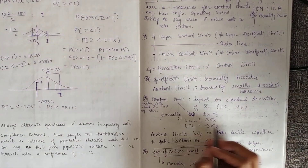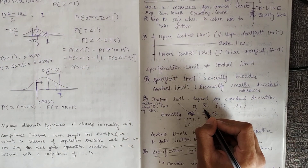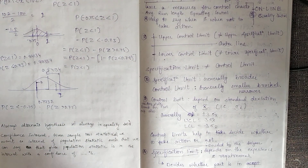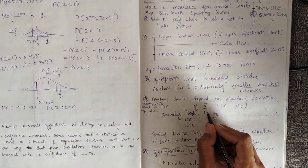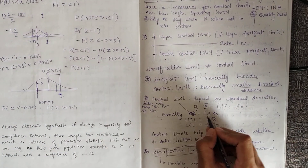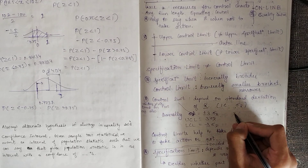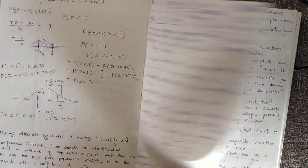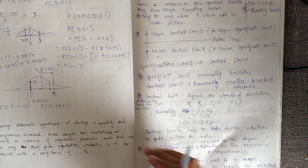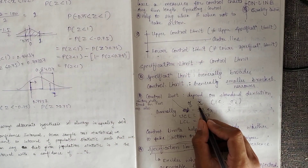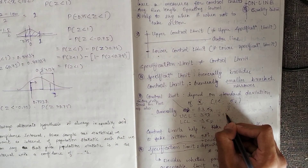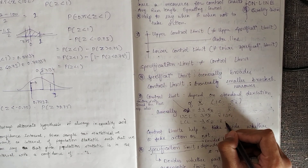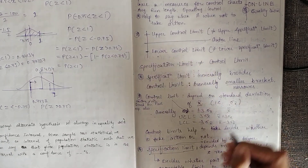For the x-bar control chart, the center line is x-double-bar. The upper control limit is x-double-bar plus 3σ(x-bar), and the lower control limit is x-double-bar minus 3σ(x-bar). We will look at this further in the next class.